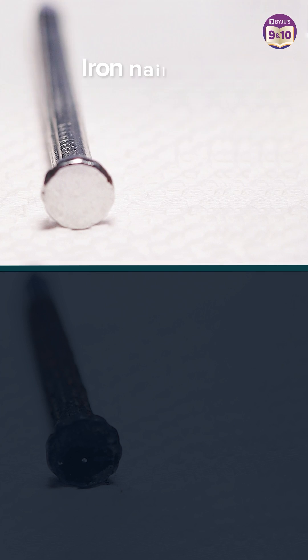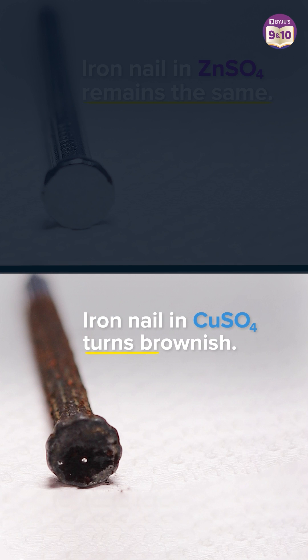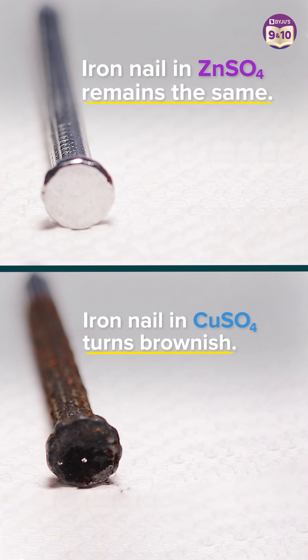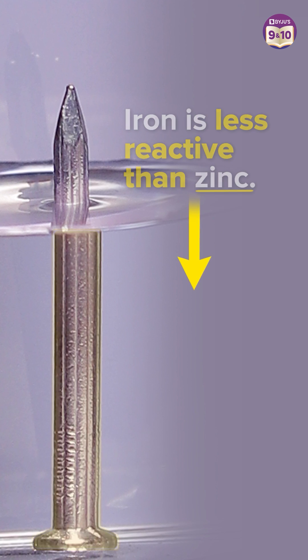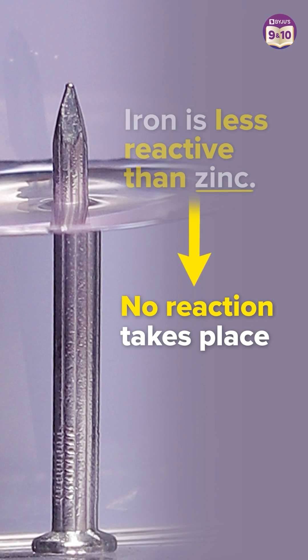The iron nail left in zinc sulphate solution remained the same. But look, the one in copper sulphate solution turned brownish. This happens because iron is less reactive than zinc. Therefore, no reaction takes place.